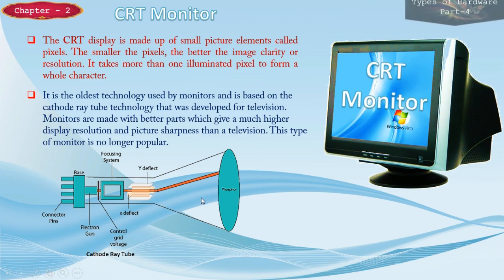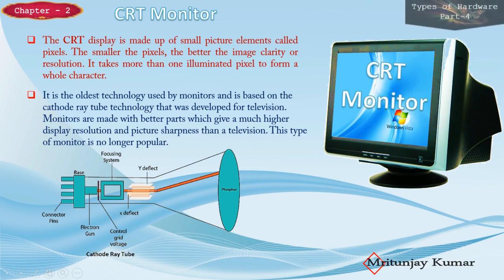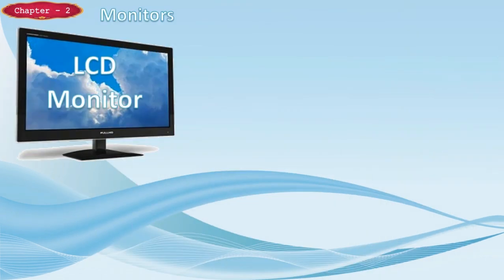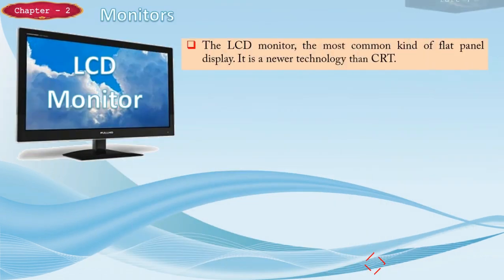In a CRT monitor there is a phosphorous layer screen, and at the back there is a base with an electron gun which emits cathode rays. These cathode rays pass through a tube and get deflected over the screen, causing the phosphor layer to glow and create pixels. Disadvantages of CRT monitors: they are heavy and large in size, have high power consumption, and use a lot of desk space.